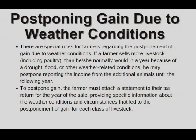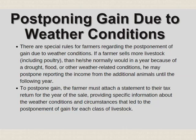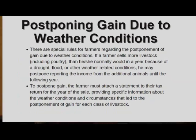This was tested on a recent exam. This is a situation where only farmers are allowed to do this — they get to postpone gain due to weather conditions. It doesn't have to be a presidentially declared disaster, and it doesn't even have to be an involuntary conversion; it doesn't have to be like a flood or a horrible thing that happens. If there's a drought, and the farmer has to sell more livestock than he normally would, he may postpone reporting the income from the additional animals until the following year. He gets a year to postpone the income. Nobody else gets to do this.